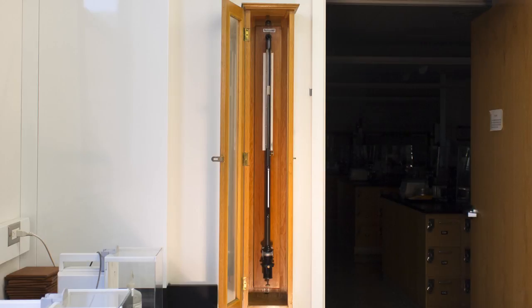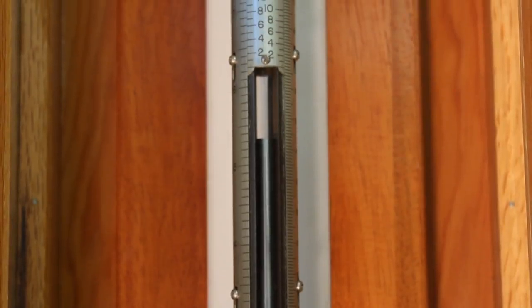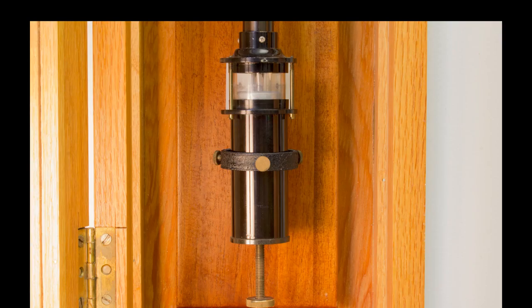This long tube, highlighted in red, has mercury in it. The top of the tube is sealed and the bottom end is submerged in a pool of mercury.